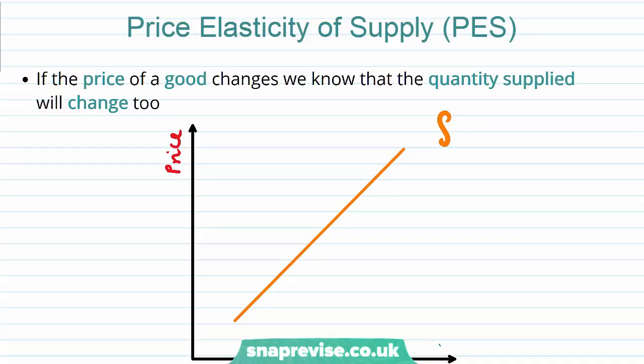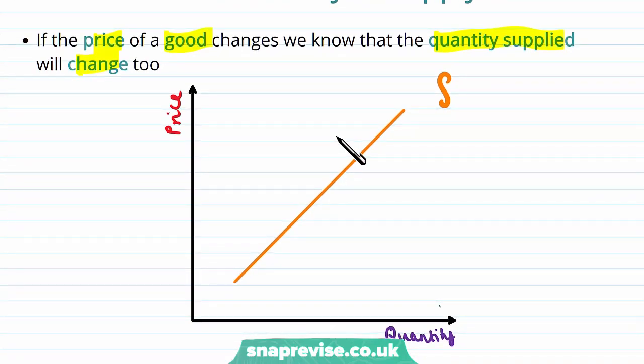So we already know that if the price of a good changes, we know that the quantity supplied will change too. And we can see this on our supply diagram.